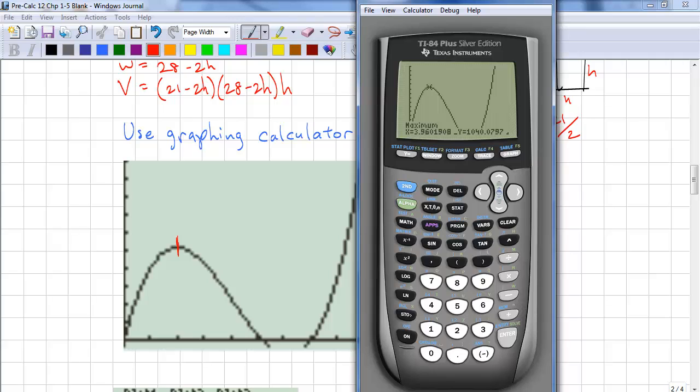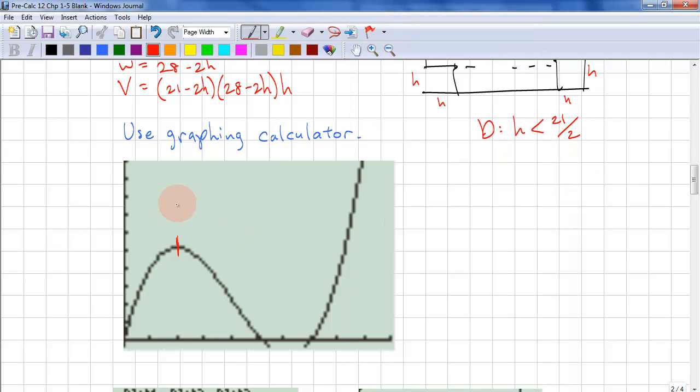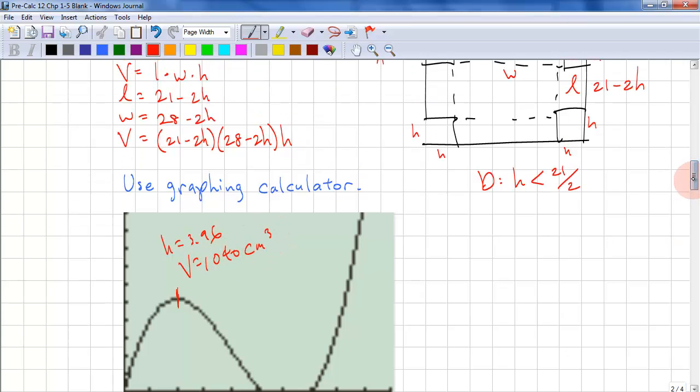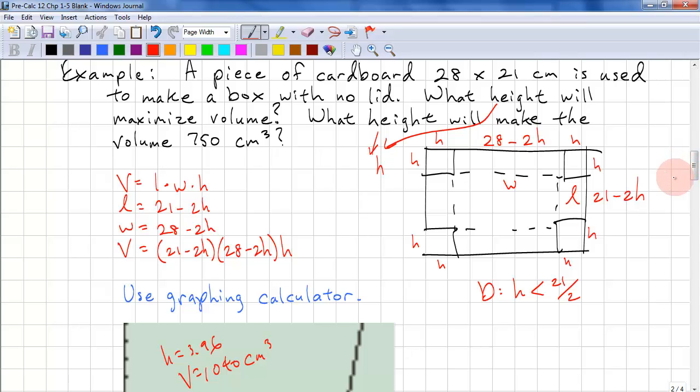Okay, so our maximum is 3.96 centimeters. h equals 3.96. And our volume is 1040 centimeters cubed. So that answers the first question. What height will maximize volume?